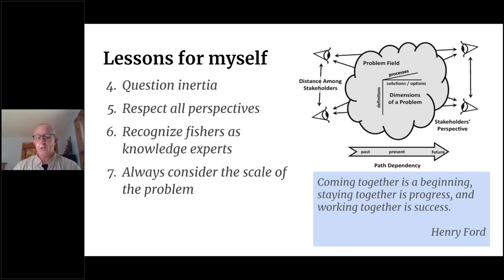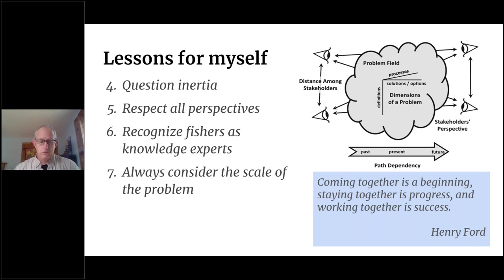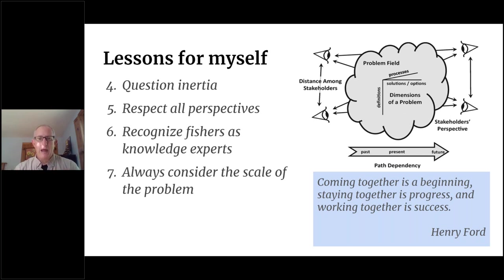Number seven is to always consider the scale of the problem. One of the traps of wicked problems is that the problem is so overwhelming it leads to inaction — you can't address the problem at its infinite, large scale. Similarly, you can't think about addressing it at such a small scale that your work is not significant to the broader problem. Like models of intermediate complexity — the MICE model theory — we need to be working in that sweet spot of complexity where we can make progress on a problem, but not be overwhelmed by large scale or trapped working at too small a scale to find the one tame solution.